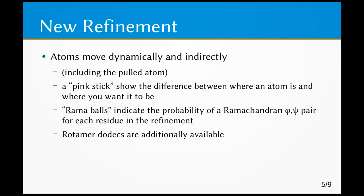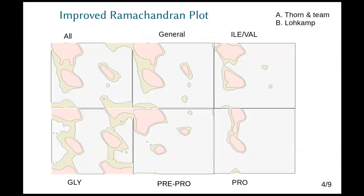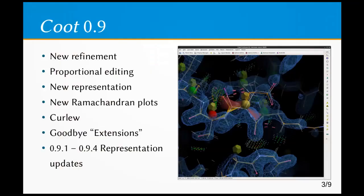The visualization also indicates the probability of a Phi/Psi pair for each of the residues in the refinement. You get these little balls — sometimes red, sometimes orange, but typically green — and you want to push them into the green colour so that they are in high probability parts of the Ramachandran plot for that particular residue type. If you're interested in rotamers, dodecahedra can represent the rotamer probability too.